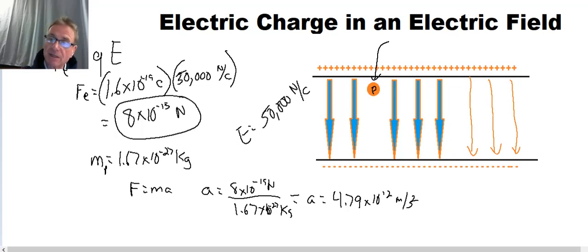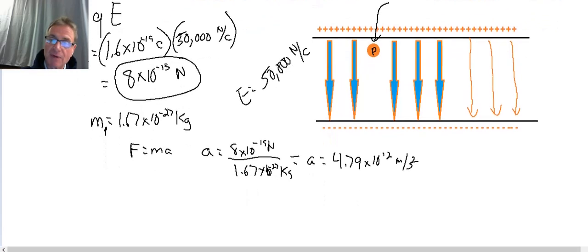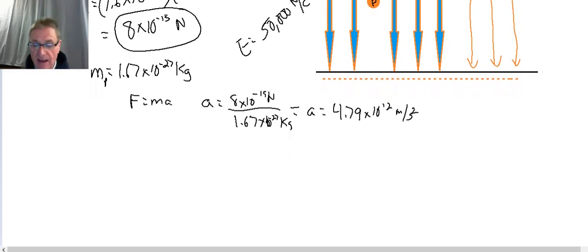So next thing we might like to know is since we have the acceleration, after a time period of 2 times 10 to the minus 6 seconds, so a relatively short time period, how fast will our proton be going? Well, now we've got to go back in our minds and use those old kinematics equations. And the kinematics equation that we're looking for is V final equals V initial plus AT.